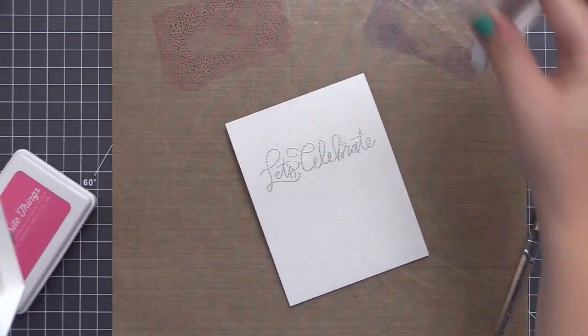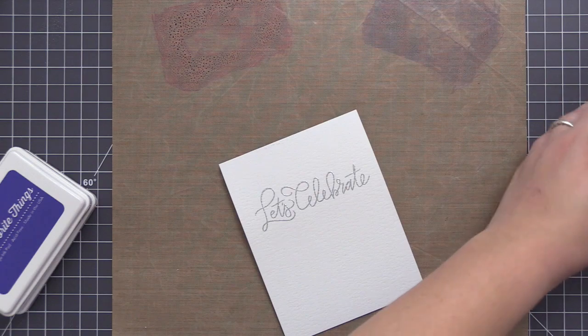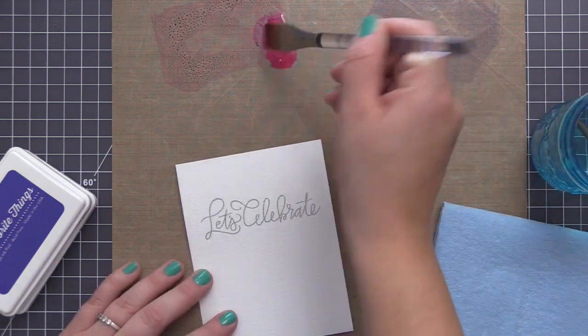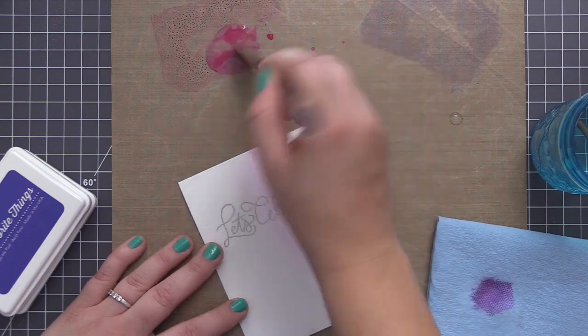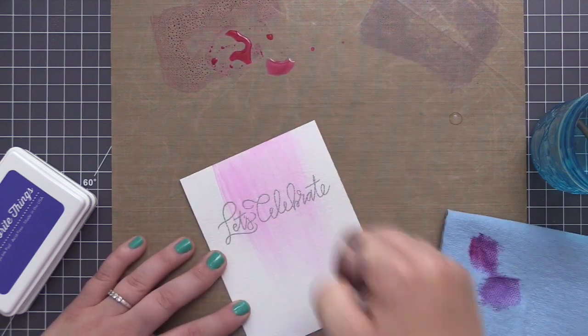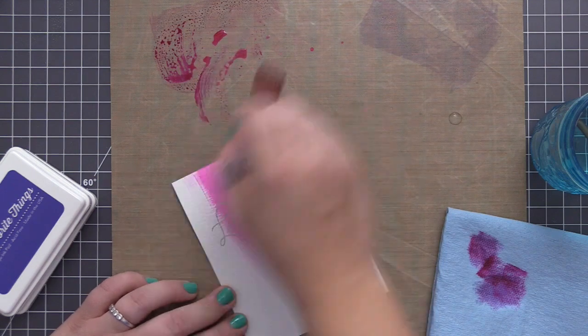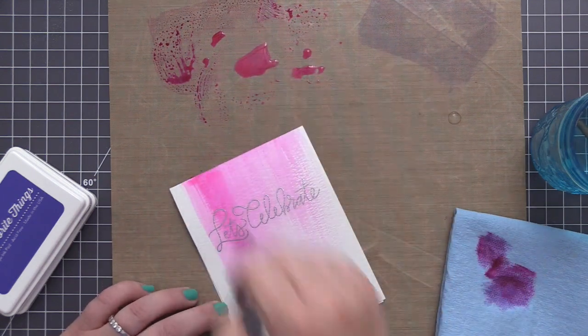So for this first card here, we're going to take two different ink colors. I have Razzleberry and Purple Rain. I'm going to take a paintbrush and I have kind of a wide paintbrush here. I'm going to use some water and I have a paper towel beside me as well. And we're just going to kind of swipe the color down from the top of the card down towards the bottom.